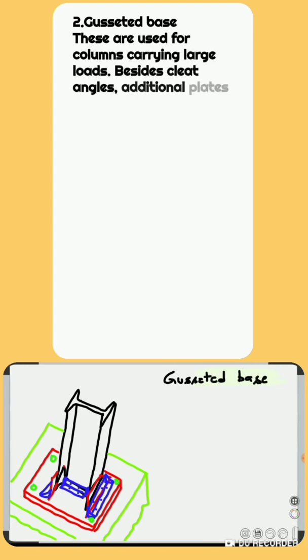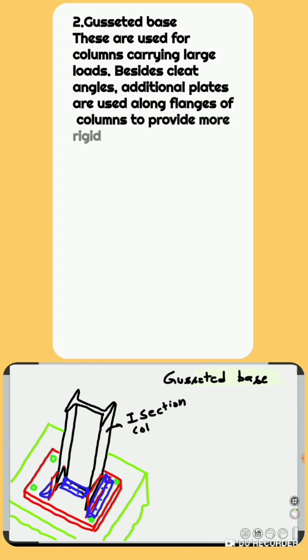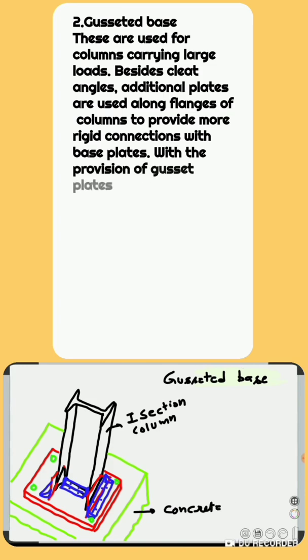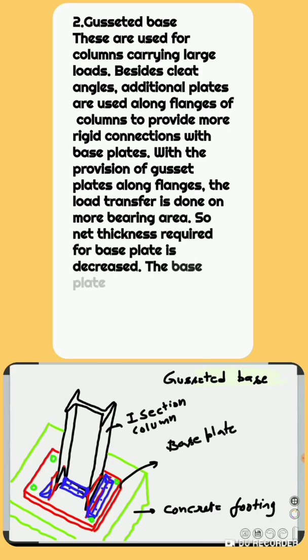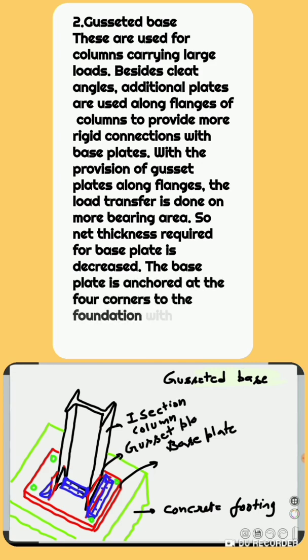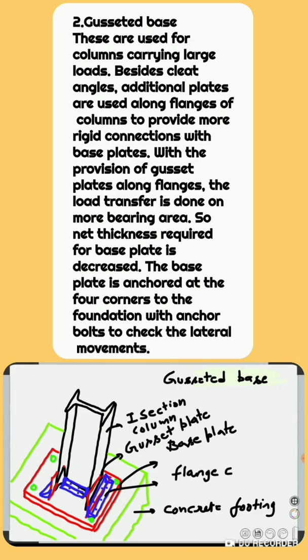2. Gusseted Base: These are used for columns carrying large loads. Besides cleat angles, additional plates are used along flanges of columns to provide more rigid connections with base plates. With the provision of gusset plates along flanges, the load transfer is done on more bearing area.